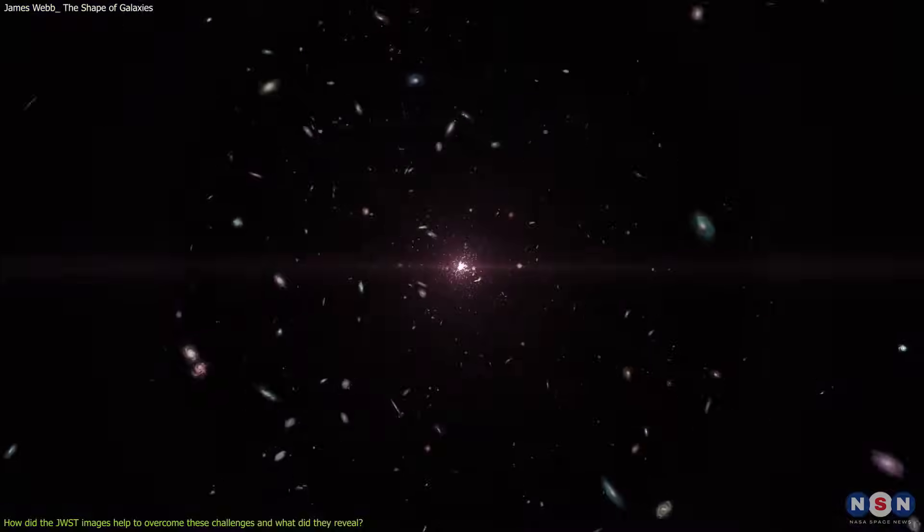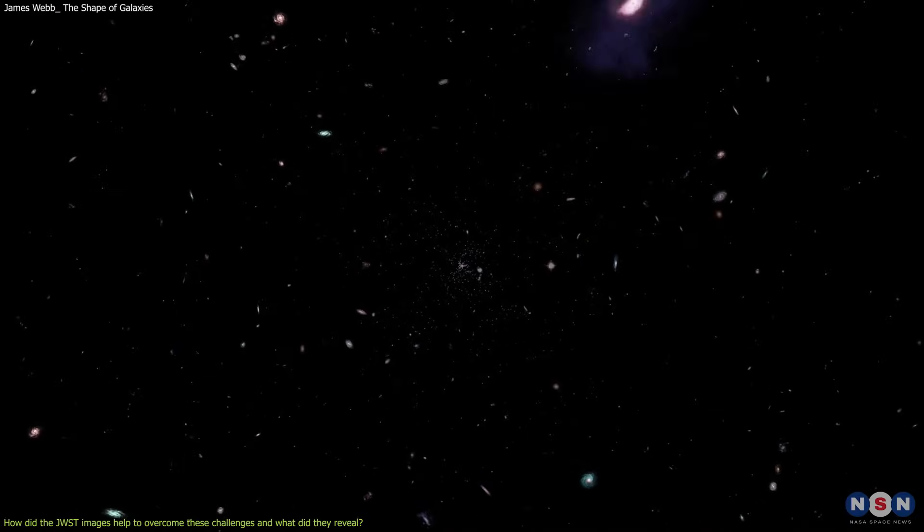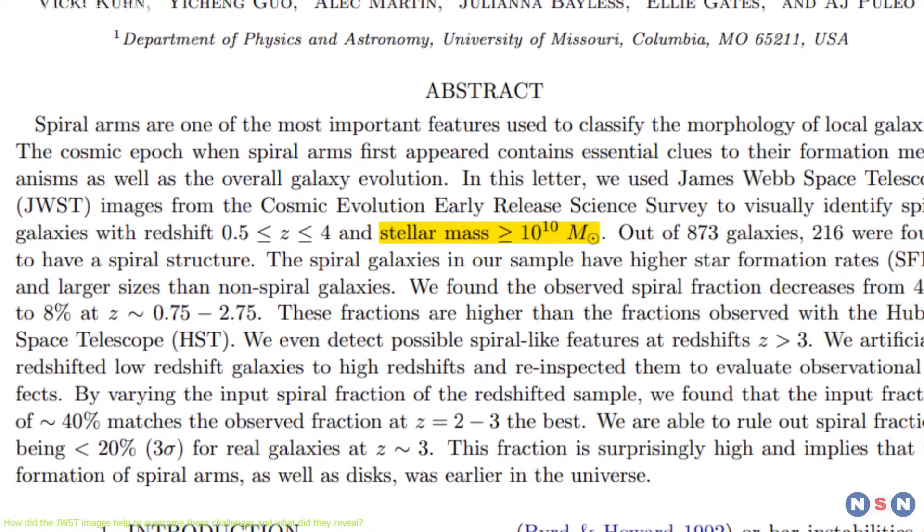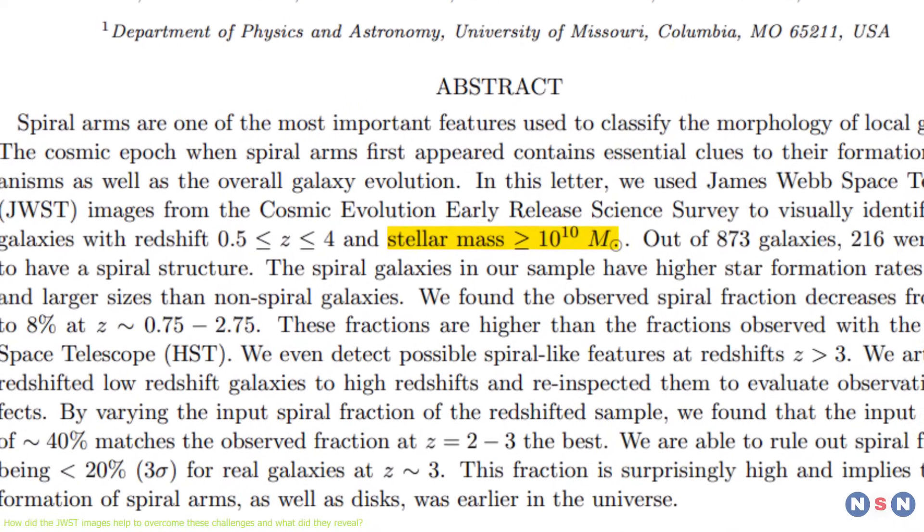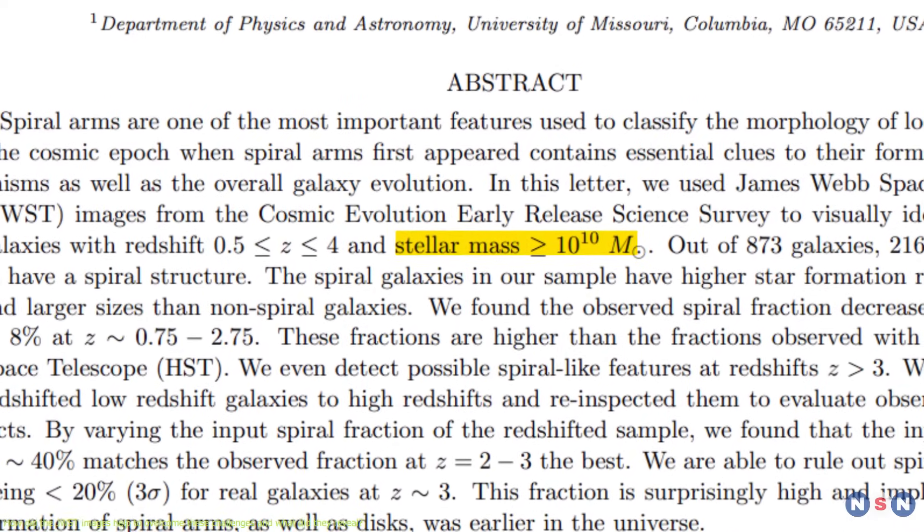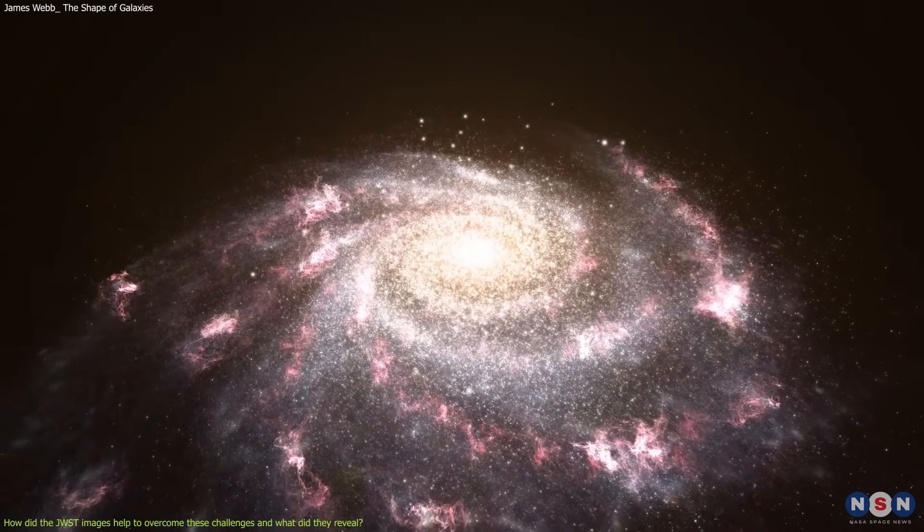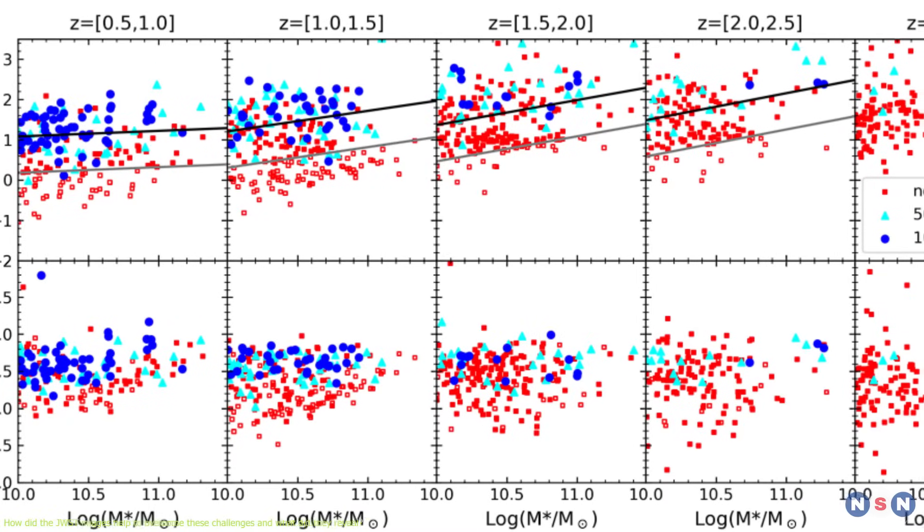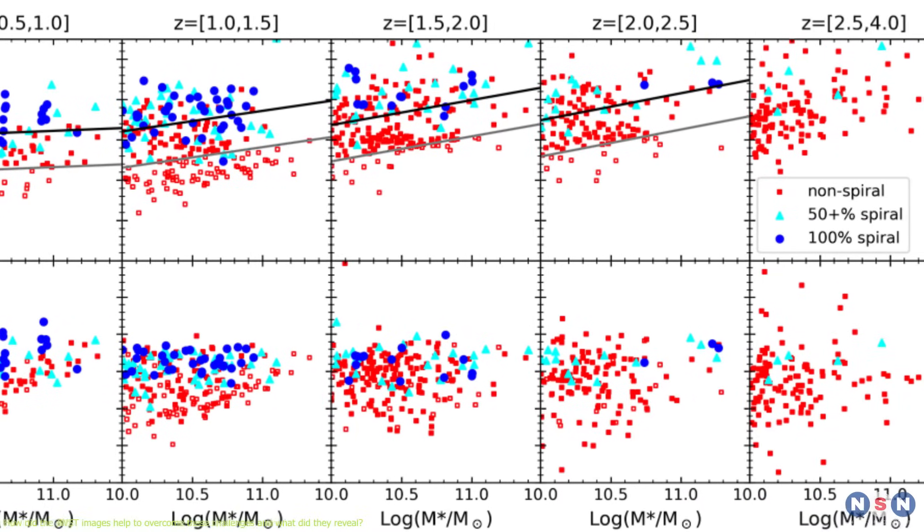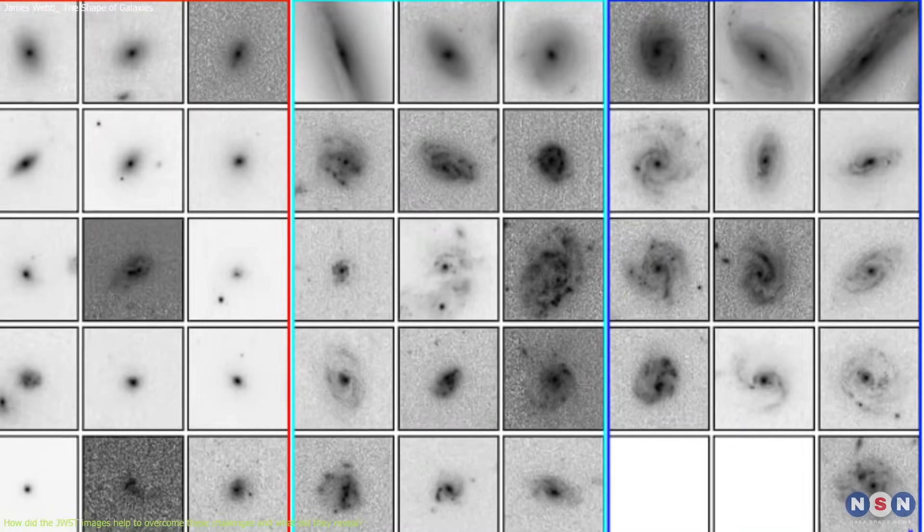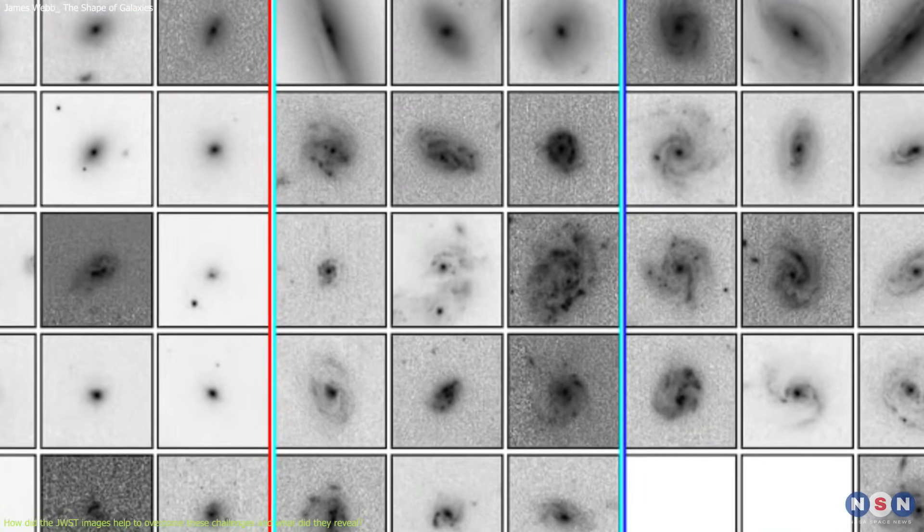And we see them as they were between 1 and 9 billion years after the Big Bang. The study also focused on the galaxies that have a stellar mass of at least 10^10 solar masses, which means that they are relatively massive and bright galaxies.